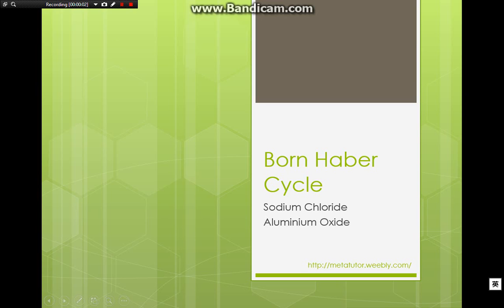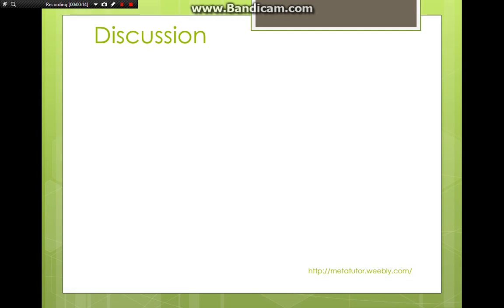In this lesson we'll be looking at the construction of Born-Haber cycles of ionic compounds. We'll be looking at two specific examples: sodium chloride and aluminium oxide. There are many definitions involved in the chapter of chemical energetics, and if you want the list of definitions you can go to the link at the bottom to download a PDF document.